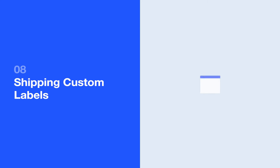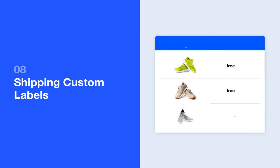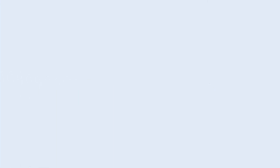If you offer different types of shipping for your products, it may be helpful to segment your products by their shipping offerings. You might want to see how your products with free shipping are performing in comparison to products that don't offer free shipping.